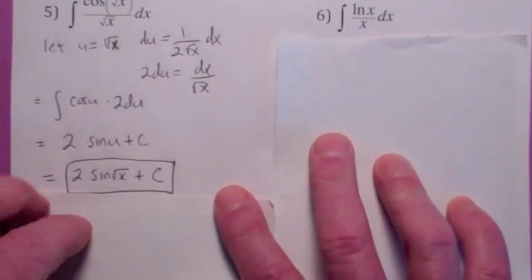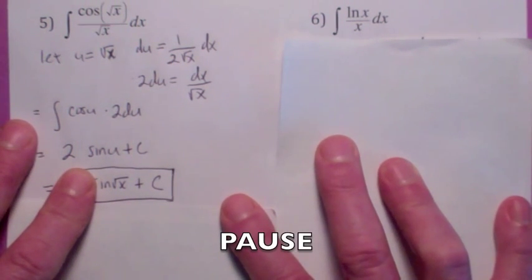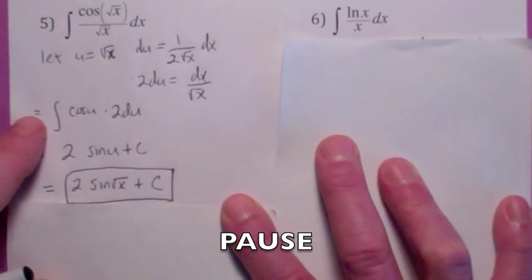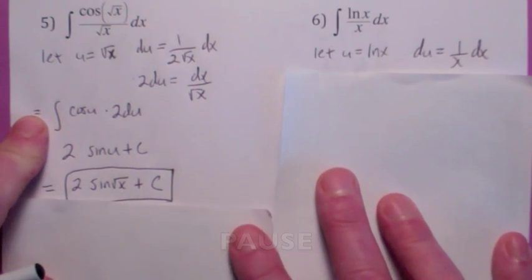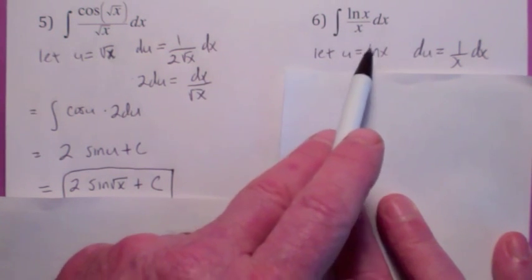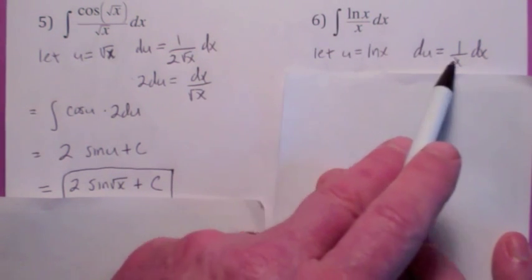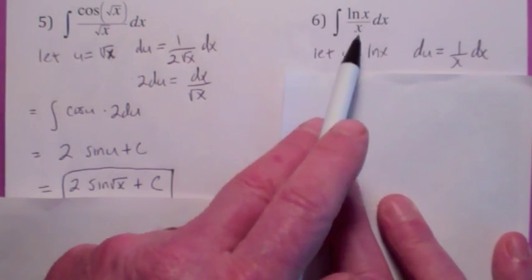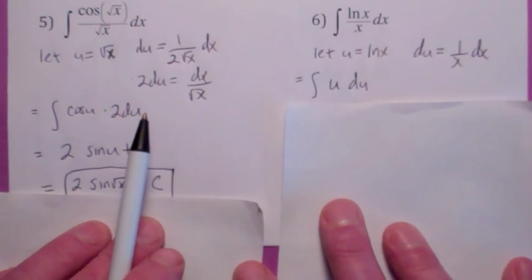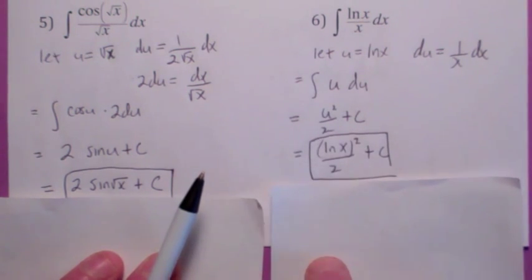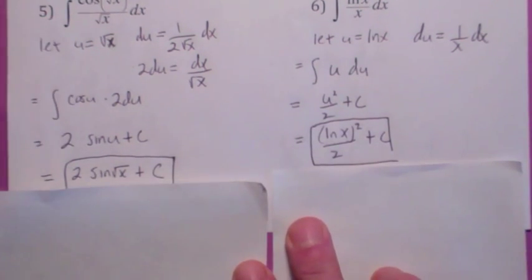Try this one — see if you can find the antiderivative of natural log of x over x dx. You have a choice here. If you let u equal the natural log of x, then the differential of u is 1 over x times dx, which is exactly dx over x — exactly what you have here. So this just becomes u du, which becomes u squared over 2 plus c. Don't forget to substitute back in terms of the natural log of x.